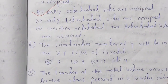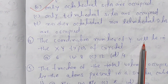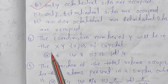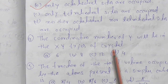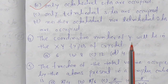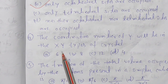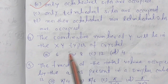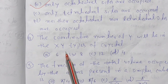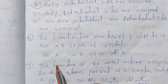Number 4: the coordination number of Y in an XY type crystal. The coordination number of Y is 6, and the coordination number of X is also 6, giving a total of 12. The answer is option A.